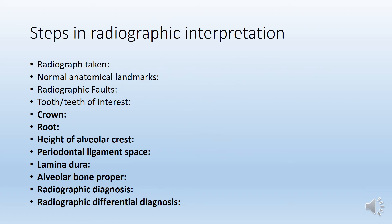Like any radiographic interpretation, the steps in interpreting an intraoral periapical radiograph would be: first, analyze the radiograph taken — what are the normal anatomical landmarks, and if there are any radiographic faults, what type of faults do we see. Then we identify which teeth are present and the teeth of interest. For each tooth of interest, it is important to discuss the crown, root, height of alveolar crest, periodontal ligament space, lamina dura, alveolar bone proper, radiographic diagnosis, and differential diagnosis wherever applicable.